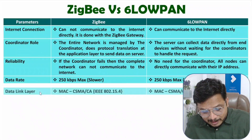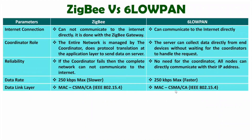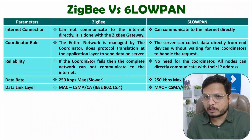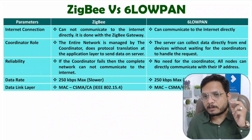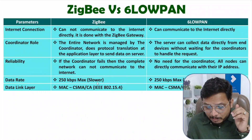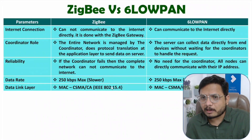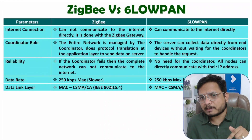The next parameter is the data link layer. At the data link layer, we perform media access control. With both protocols, this is done using CSMA/CA — Carrier Sense Multiple Access Collision Avoidance — as per the IEEE 802.15.4 standard. A separate video on CSMA/CA exists in the computer network lecture series, and details on the IEEE 802.15.4 standard are covered in the IoT lecture series.